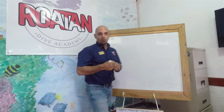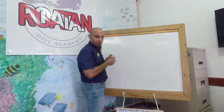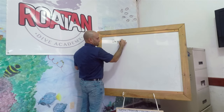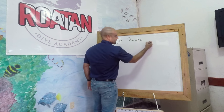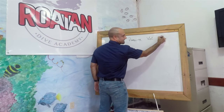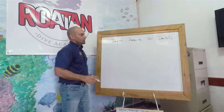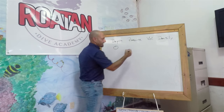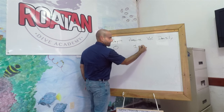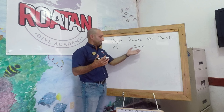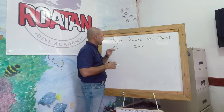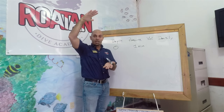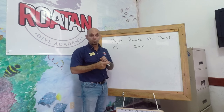From our open water diver course, we know there's a table with depth, pressure, volume, and density. At zero meters — sea level — we have one atmosphere of pressure. You can use either bar or ATM; they're exactly the same for calculation purposes. At sea level, we have one bar or one atmosphere, which is the weight of all the air above us at the surface of the ocean.